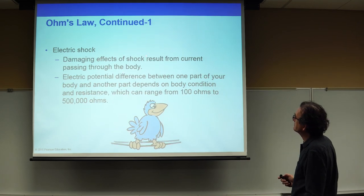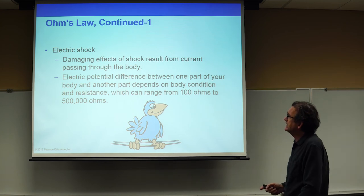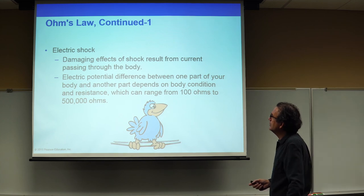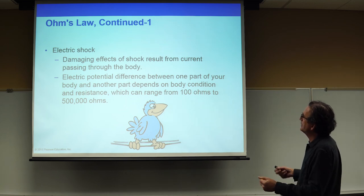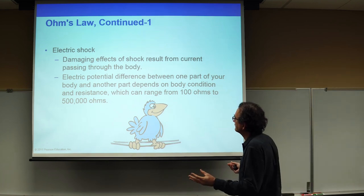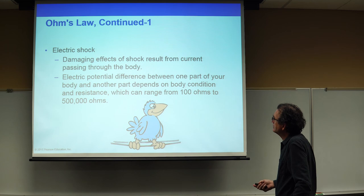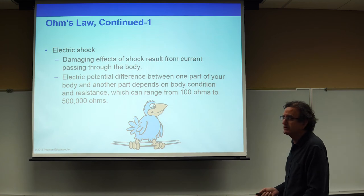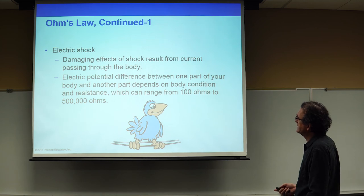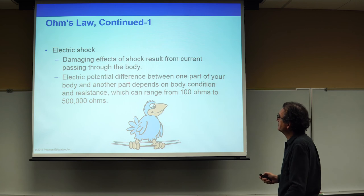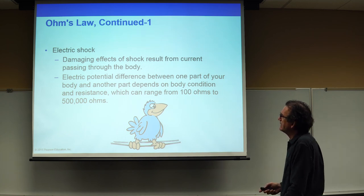Damaging effects of shock result from current passing through the body. Whenever current exceeds a tenth of an amp or so, it will be a fatal condition. The question is what electric potential is required to make that happen — and that's more difficult because it depends on whether your body is dry or moist. Generally, you don't want to touch terminals above 100 volts. Anything above 100 volts will produce a significant shock through your body and can be potentially dangerous.